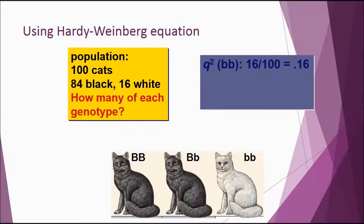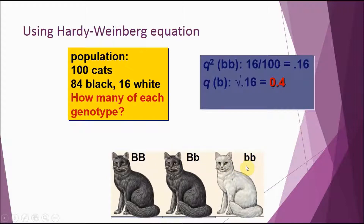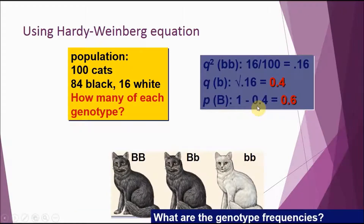From there you can use p plus q equals 1 to determine each value. Take the square root of 0.16 and you get 0.4 — so 40 percent of the alleles in the population are the recessive allele. They could be in the heterozygous or the recessive phenotype. Since we now have q, we can find p: 1 minus 0.4 gives us p equals 0.6, meaning 60 percent of the alleles in the population are dominant.